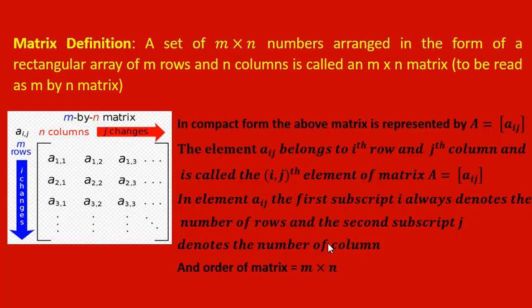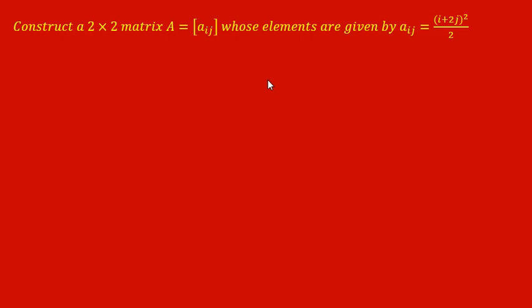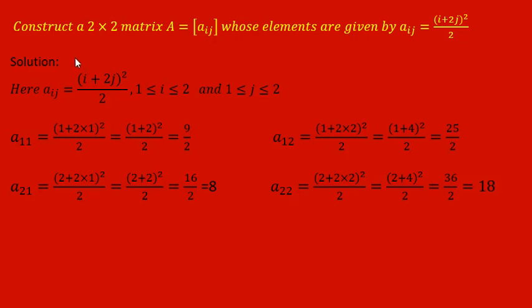Now let us see one example to understand how we can construct a matrix when it is given in compact form. The problem is: construct a 2 by 2 matrix A equal to Aij whose elements are given by Aij equal to (i plus 2j) squared divided by 2. Here i is number of row and j is number of column. The order 2 by 2 means 2 rows and 2 columns — that means total 4 elements.